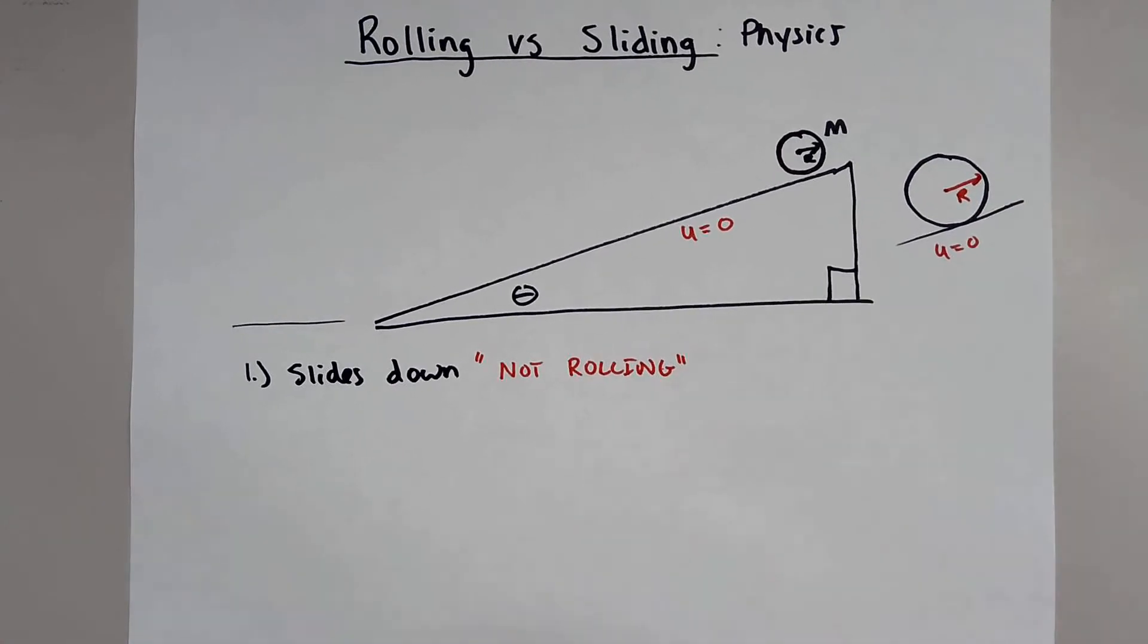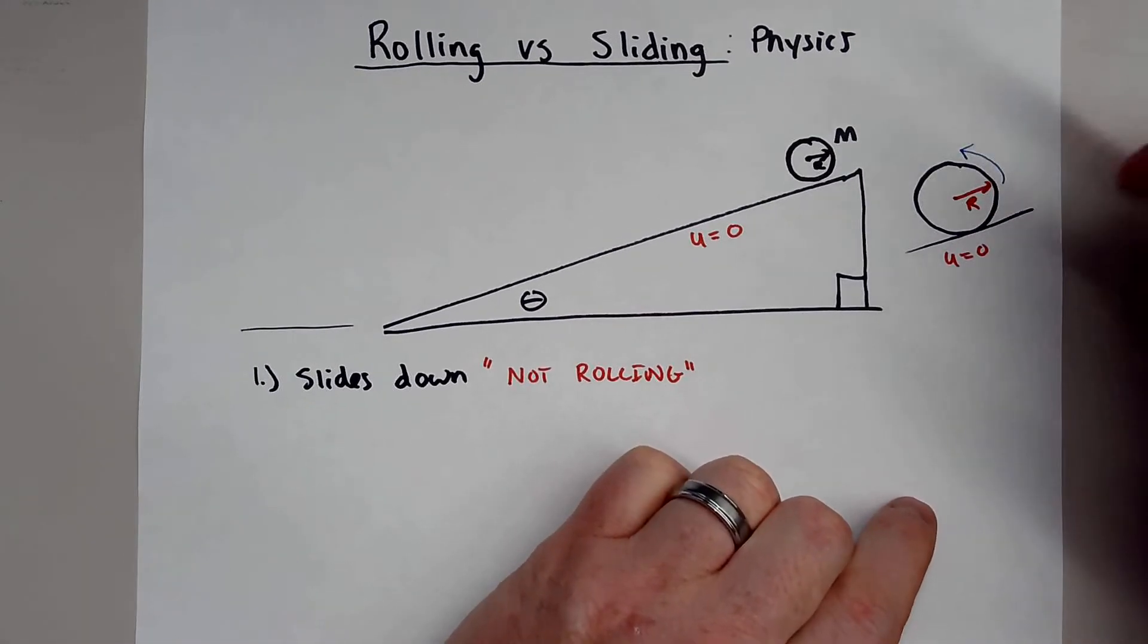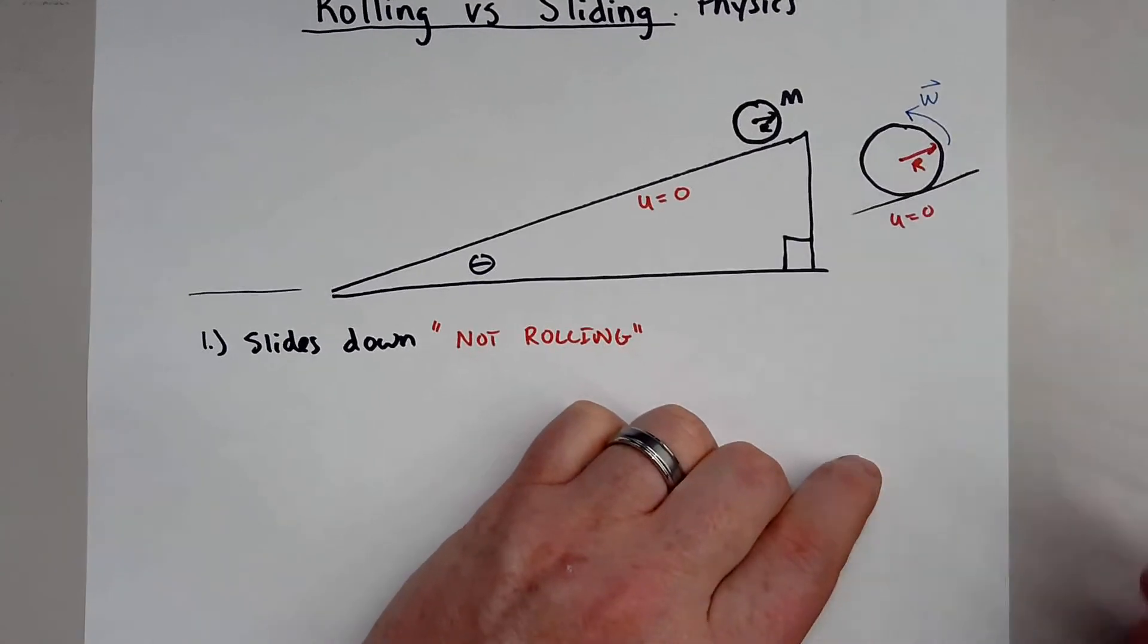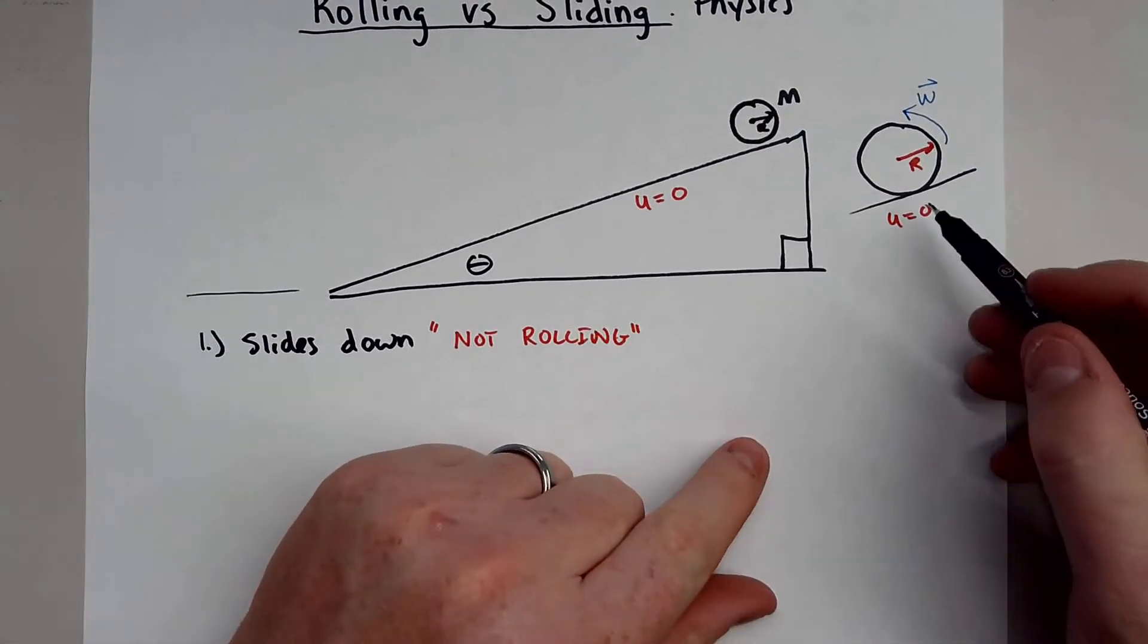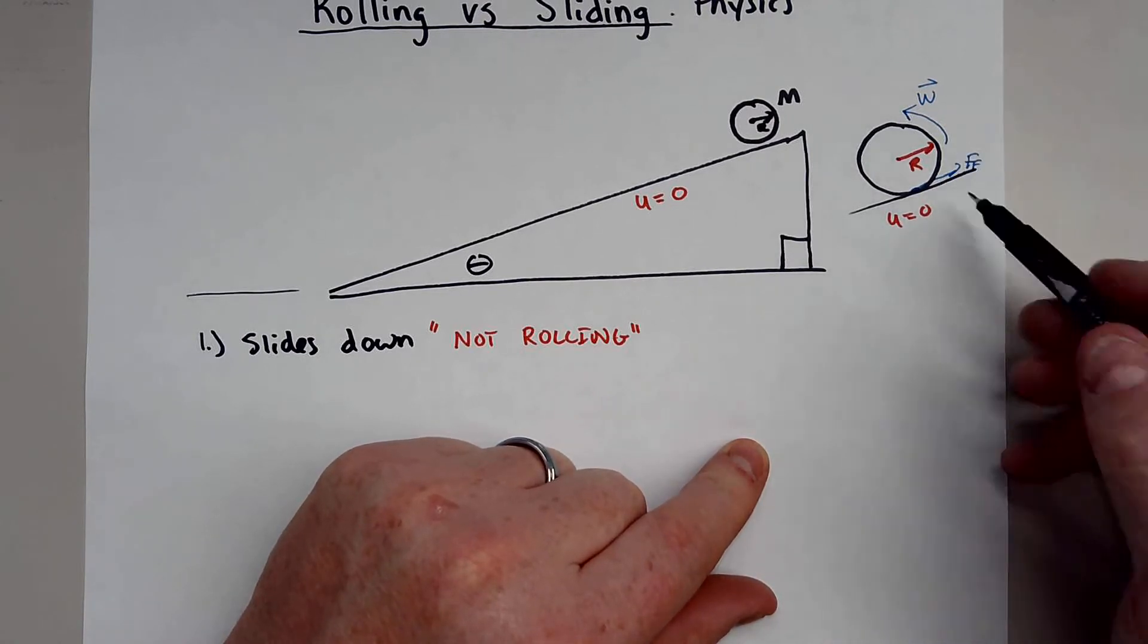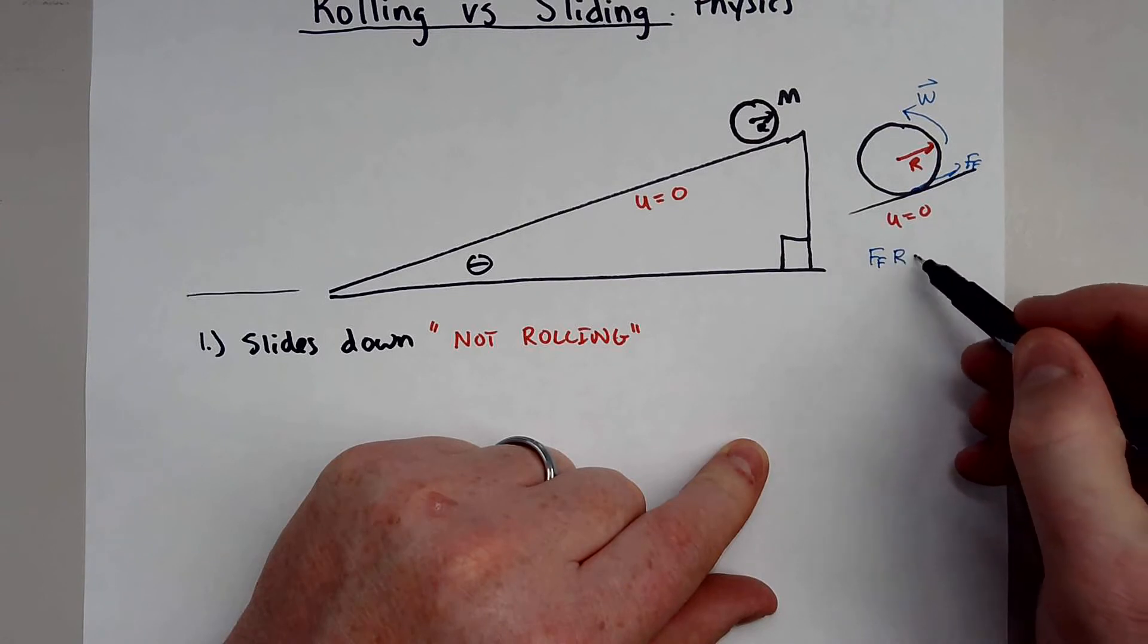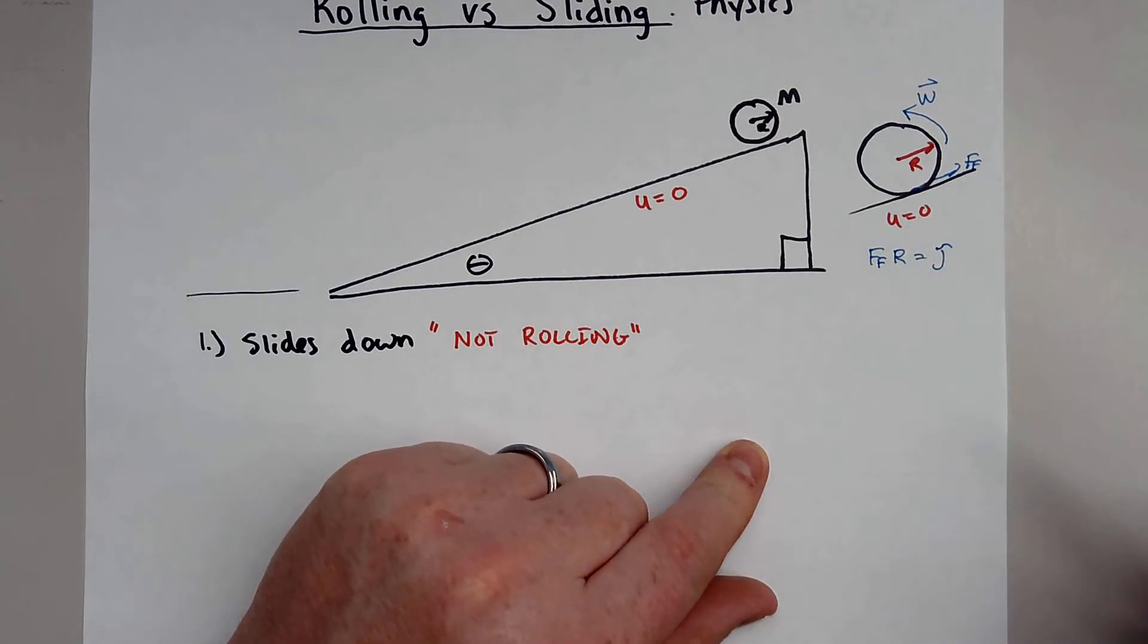or to even gain some sort of angular velocity like we see here, there has to be an external force of friction. Friction is usually what causes this. This actually causes a torque. So the force of friction times your radius actually causes a torque.